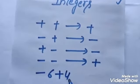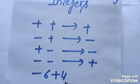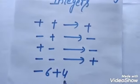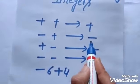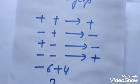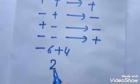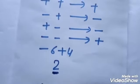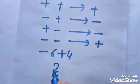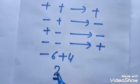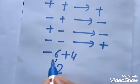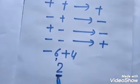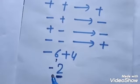Take an example: minus six plus four. Read these numbers according to their sign — it's minus six and plus four. Minus plus is minus, so six minus four is two. Now the sign of this answer: six is the greater number and its sign is minus, so the answer is also negative.